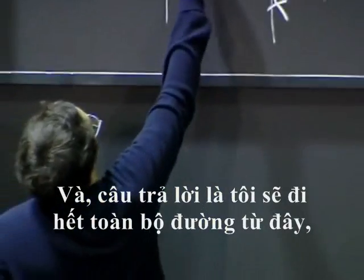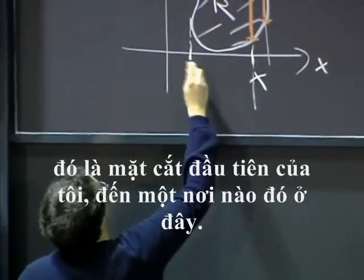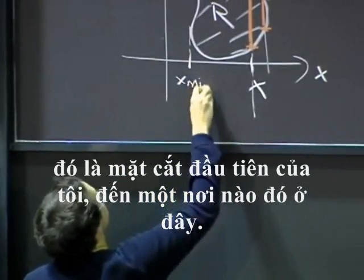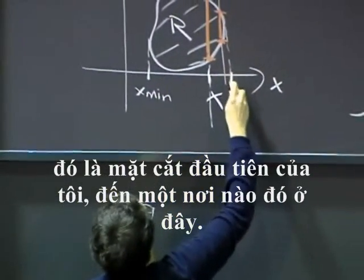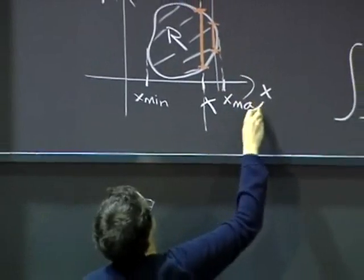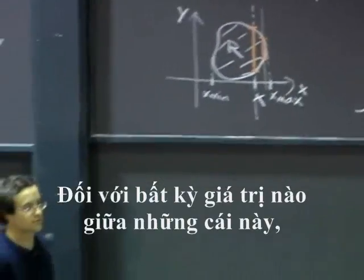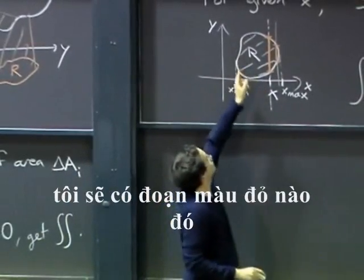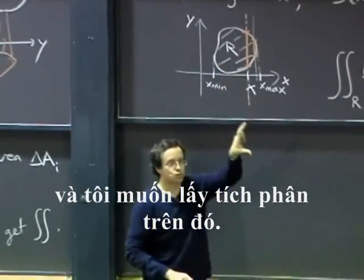And the answer is I would go all the way from here, that's my first slice, to somewhere here, that's my last slice. For any value in between these, I will have some red segment and I will want to integrate over that.